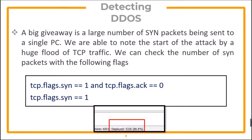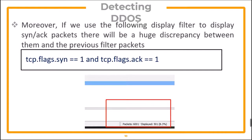A big giveaway is a large number of SYN packets being sent to a single PC. We are able to note the start of the attack via a huge flood of TCP traffic. We can check the number of SYN packets with a given flag. Moreover, if we use the display filter to show SYN-ACK packets, there will be a huge disparity between them and the previous filter packets.